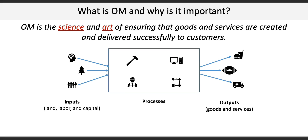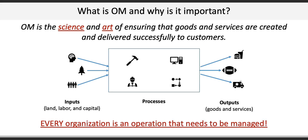Conceptually, operations management is quite simple. An operation takes inputs such as land, labour, and capital, and through various processes and systems, converts those inputs into outputs we generally categorize as goods and services. Ultimately, whether we're talking about a for-profit company or a non-profit, a manufacturer of computers, a law firm, a school, a hospital, or a government, OM can be applied. Every organization is an operation that needs to be managed.